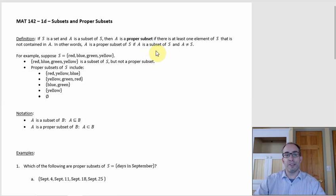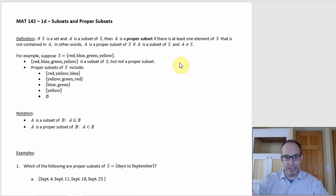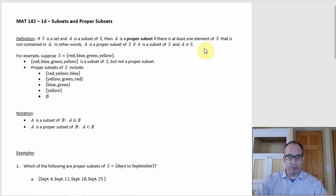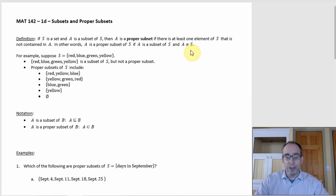Proper subsets. So what is a proper subset as opposed to just a subset in general? It's one that's a subset but it's not the entire original set. So if S is a set and A is a subset, then A would be a proper subset if there's something in S that's not also contained in A. In other words, A is a proper subset of S if A is a subset but it's not the entire original set — so A is not equal to S.